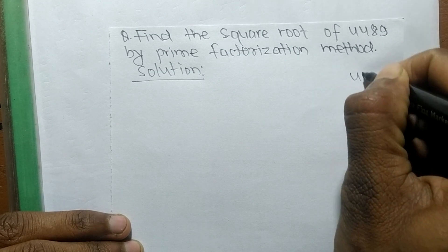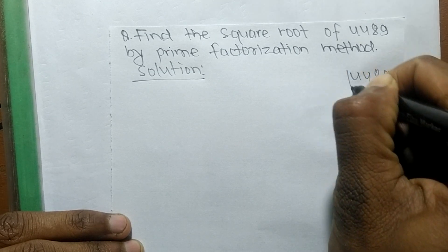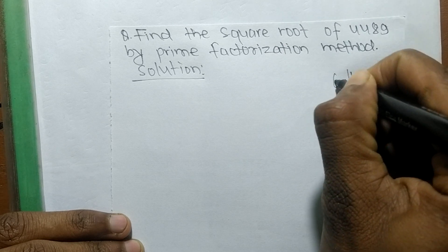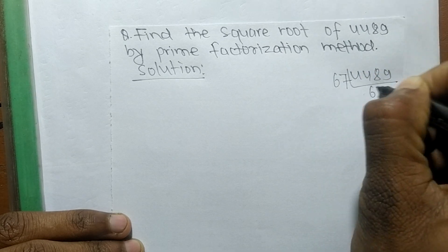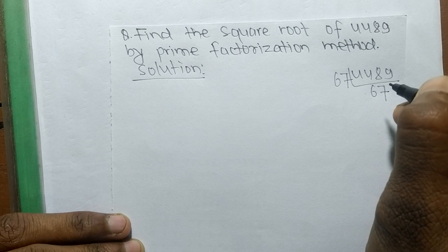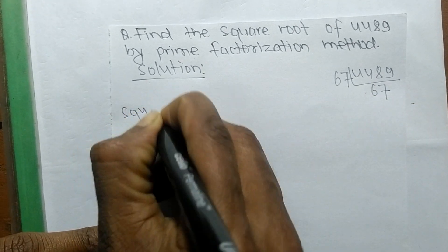The factors of 4489: it is 67 times 67 equals 4489. So as you know, we are finding here a square root.